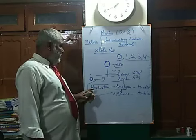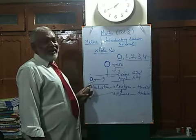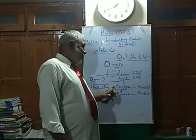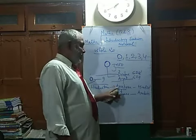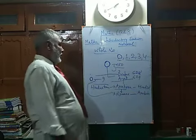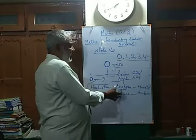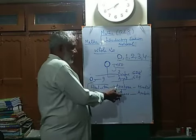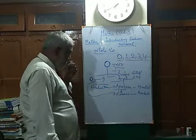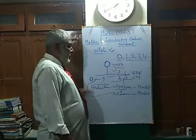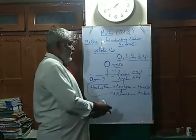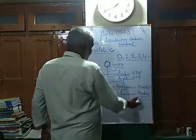We had trade relations with Arabians and from India, from Hindustan, this number went to Arab and Arabians called these numbers Hindseq. Romans had trade relations with Arabians. So from Arab, these numbers went to Rome and those Romans called these numbers Arabica.